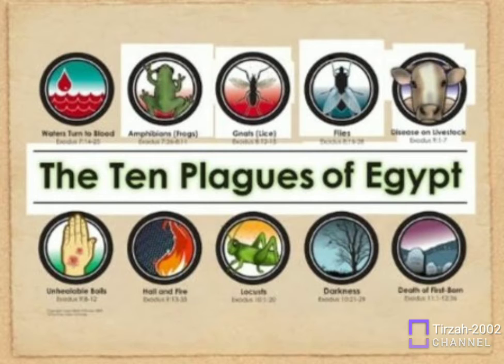Boils — Horrible boils break out on everyone. The result: The magicians cannot do anything because they have boils too. Exodus 9:8-12. Plague 7.